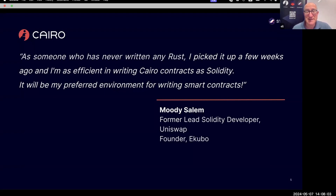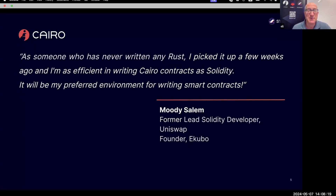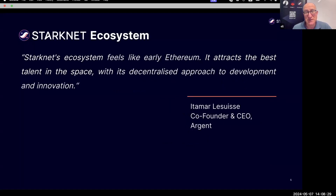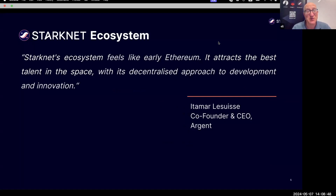If you take the words of Moody Salem, who is the former lead Solidity developer of the Uniswap protocol and is now the founder of Kubo, which is an AMM over StarkNet — he says that as someone who has never written any Rust, he picked it up in a few weeks and is as efficient in writing Cairo contracts as Solidity, and it will be his preferred environment. Or take Itamar Le Suisse, the co-founder and CEO of Argent, one of the leading wallets with native account abstraction on StarkNet, who says StarkNet's ecosystem feels like early Ethereum — it attracts the best talent in the space with its decentralized approach to development and innovation. Welcome aboard, you'll enjoy the ride.